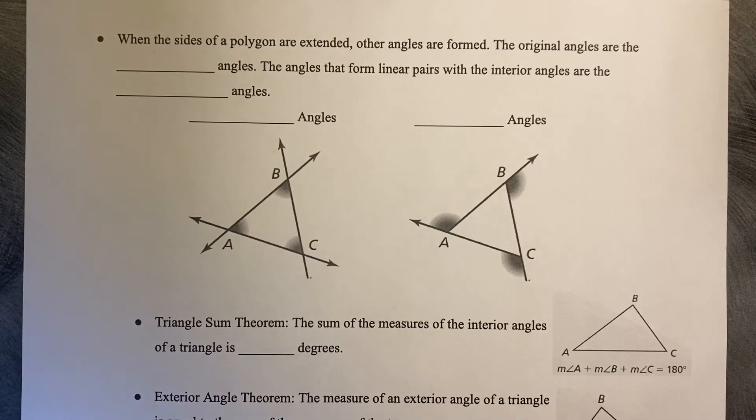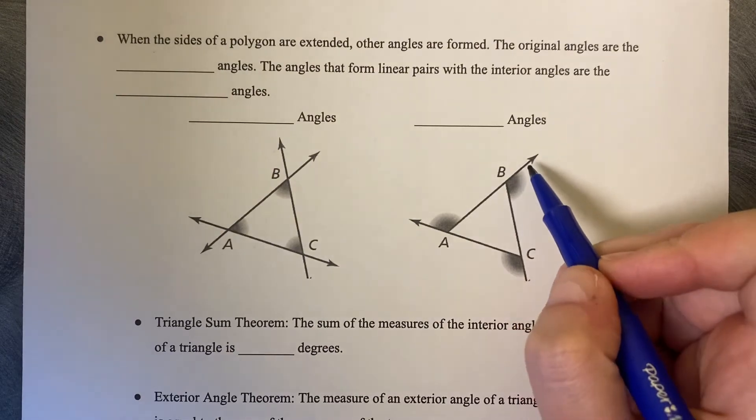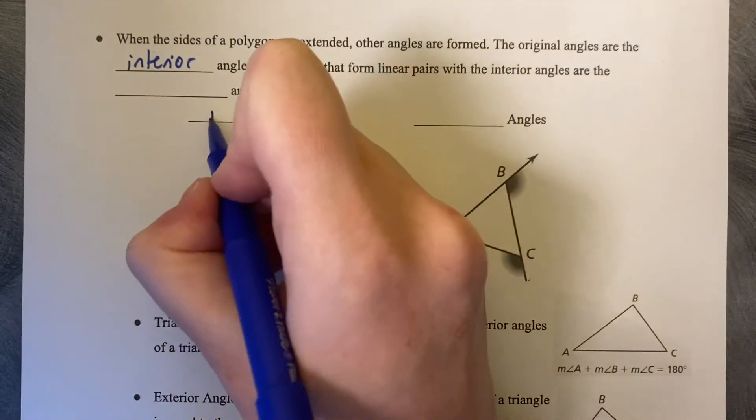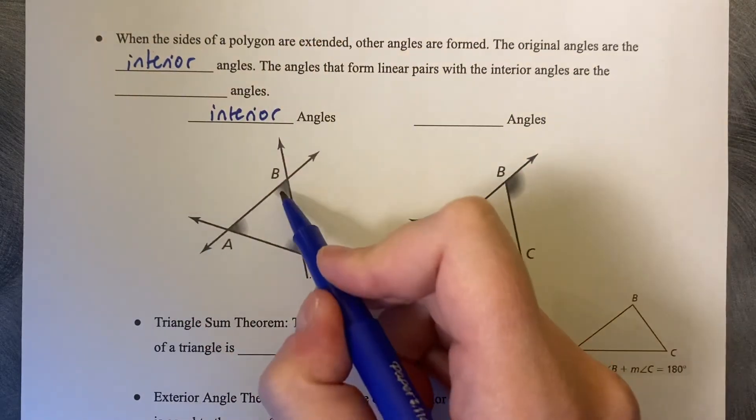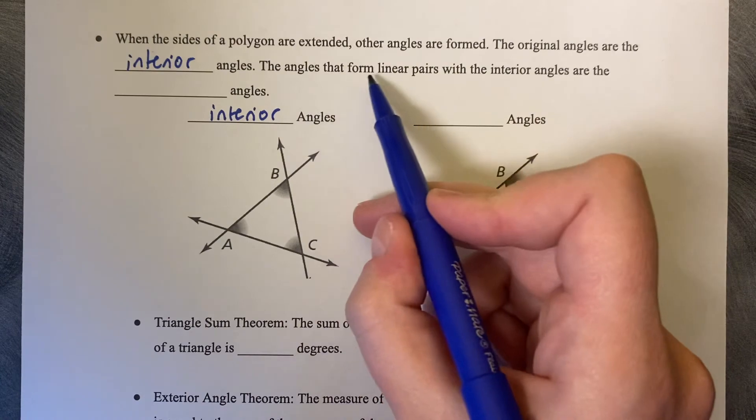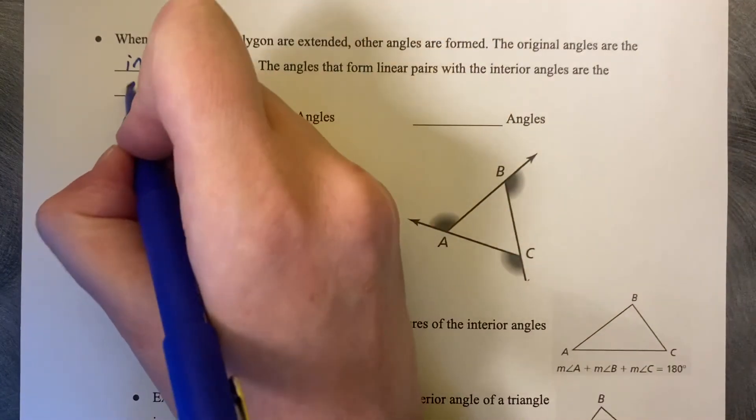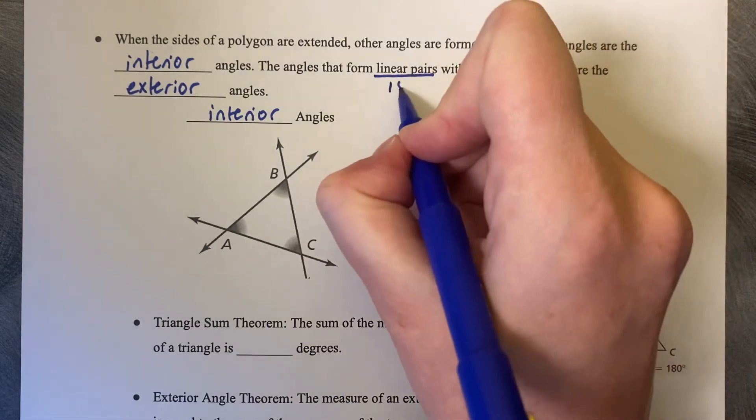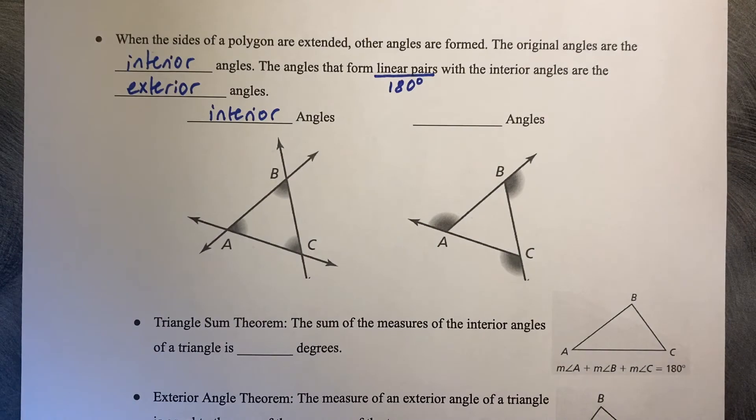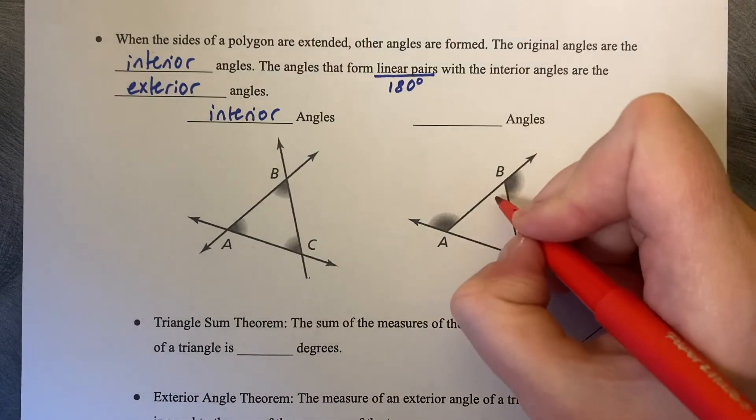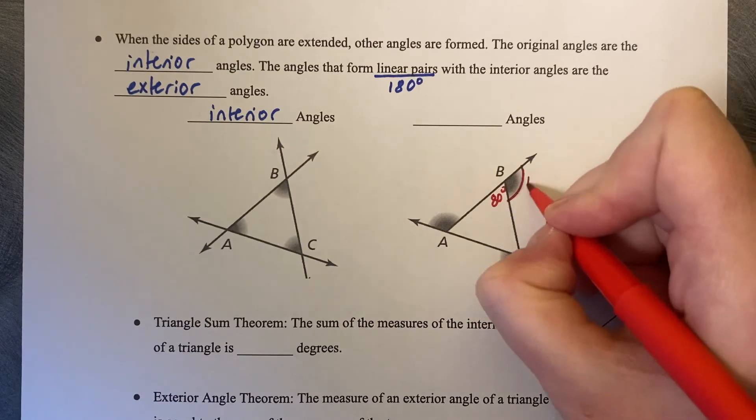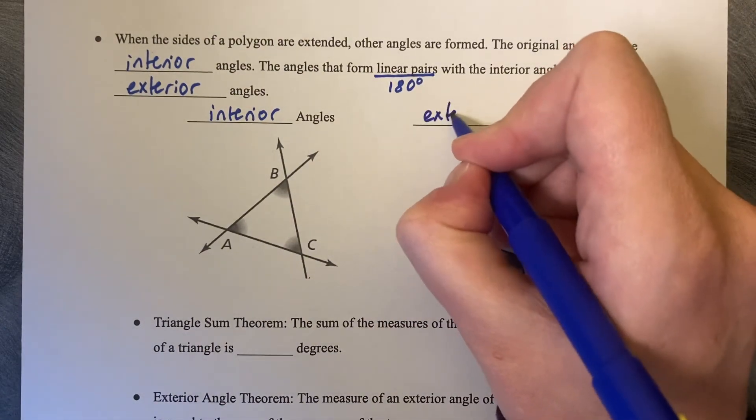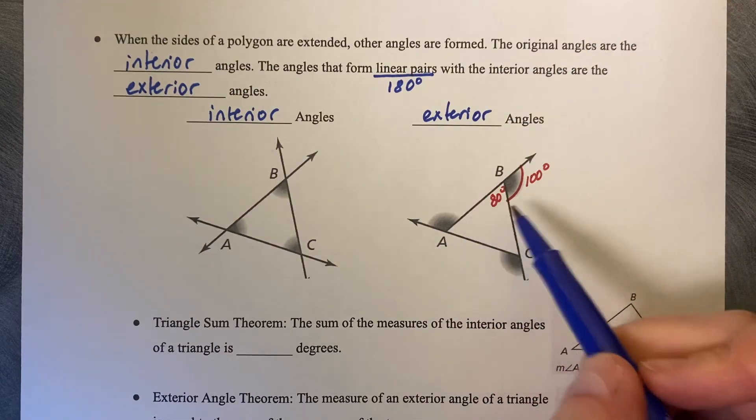When the sides of a polygon are extended, see how the arrows extend out here, other angles are formed. The original angles are interior angles, and that's this picture right here. The ones that are on the inside of your intersections. The angles that form linear pairs with the interior angles are exterior. Remember that linear pairs are two angles that lie on a line together and they sum to 180 degrees. So this diagram here, if this angle measure were 80 degrees, then this angle measure would be 100 degrees. Those are a linear pair right next to each other. These are exterior angles, these outside angles that are not on the inside of the triangle.